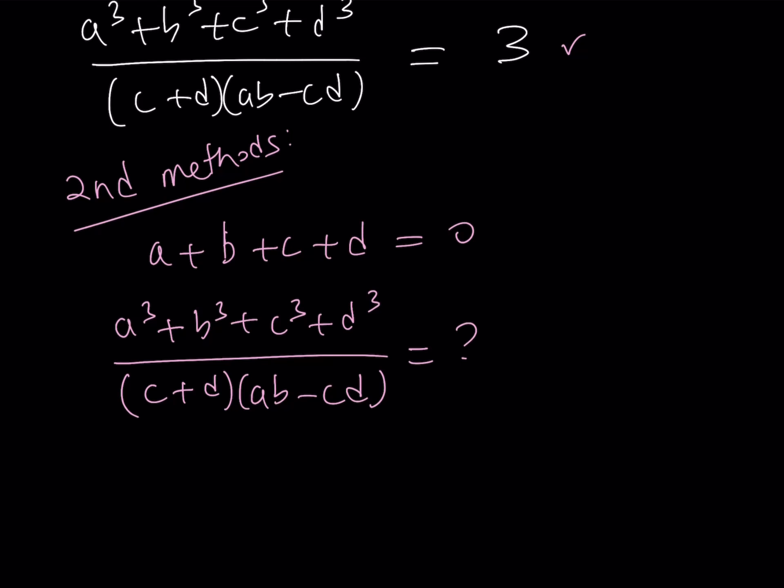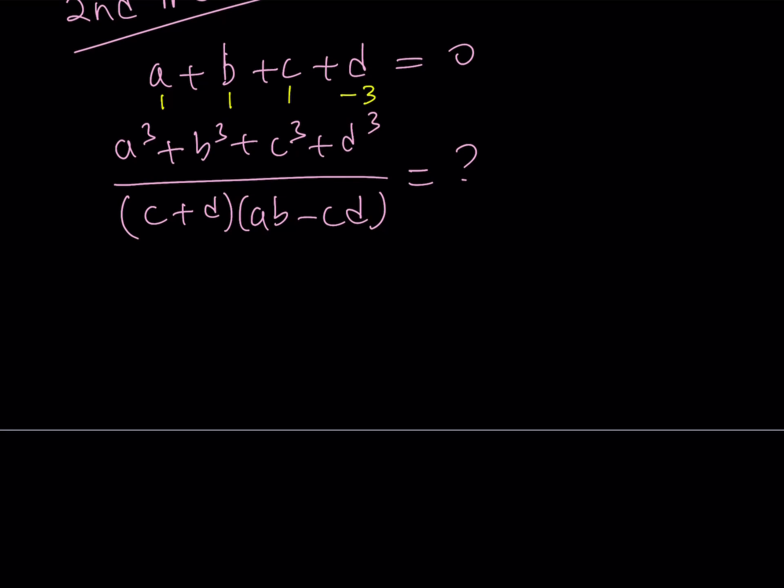We're trying to evaluate this. So why not replace a, b, c, d with certain values, such as I can use one for a, one for b, one for c, and I have to use negative three for d. That's basically mandatory, right? So let's go ahead and replace a, b, c, d with those values and see what happens. Obviously, cubes are going to be the same as one, but negative three cubed is going to give us negative 27. And then c plus d, one plus negative three, can be written as one minus three. a, b is one, and c, d is negative three.